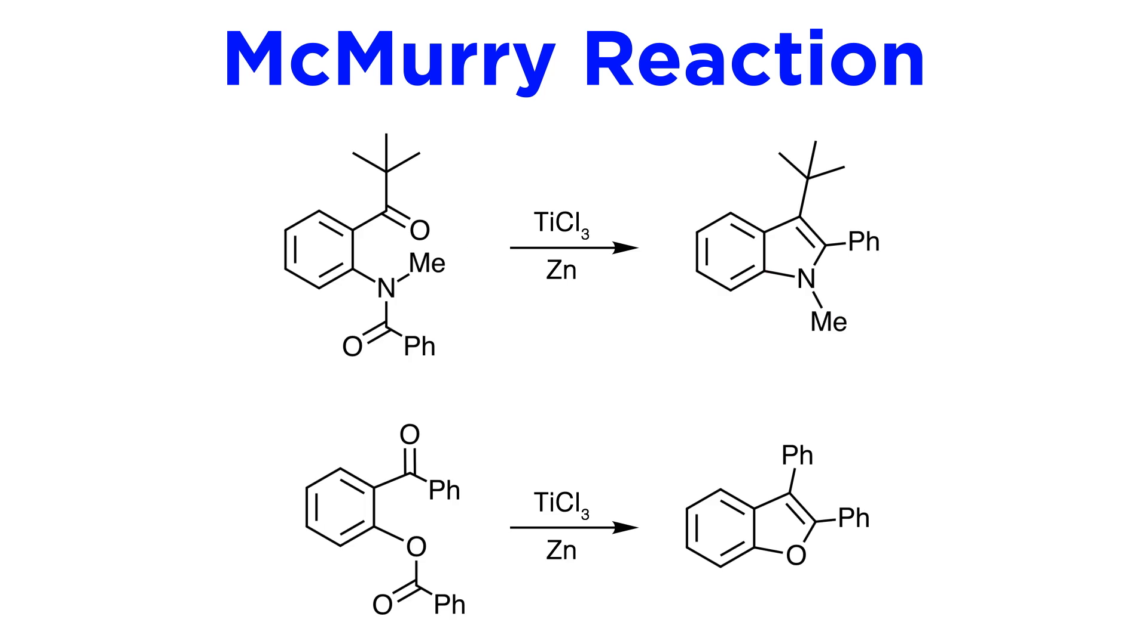The McMurry reaction is not limited to ketones and aldehydes. Other carbonyl compounds, such as esters and amides, can in some cases undergo the McMurry reaction, allowing for the synthesis of heterocycles. For example, the reaction is especially useful for building hindered indoles in good yields using the standard titanium trichloride zinc protocol.